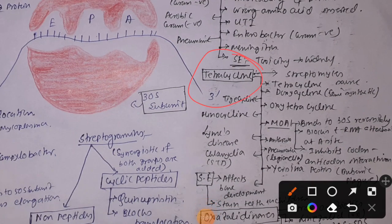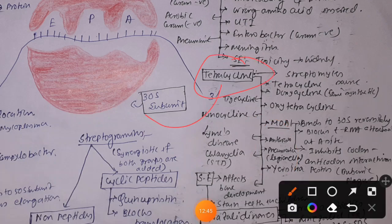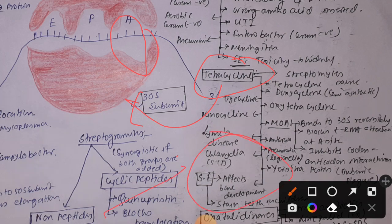Tetracycline is also isolated from Streptomyces. Examples include tetracycline, oxytetracycline, tigecycline, minocycline, and doxycycline — note that doxycycline is semi-synthetic. Tetracyclines reversibly bind to the 30S ribosomal subunit, block tRNA binding at the A-site, inhibit codon-anticodon interaction, and thereby inhibit protein synthesis. They are used for Lyme disease, chlamydia, Bacillus anthracis infection, and pneumonia caused by Legionella.